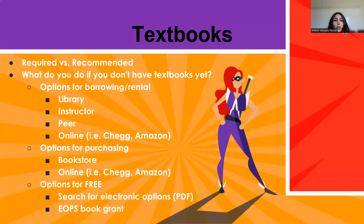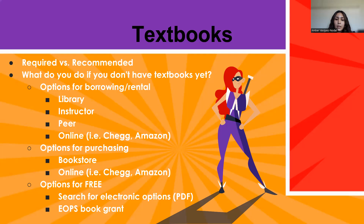Textbooks — required versus recommended. Required means the text and supplies are needed for the class. Recommended text and supplies are listed to enhance learning. If you don't have textbooks yet, there are options for borrowing and renting, such as from the library, your instructor, a peer, or online sources like Chegg and Amazon. You can also purchase from the bookstore at Rio Hondo or online. There may also be free options — you can search for electronic versions such as PDFs, or check for resources like the EOPS book grant.